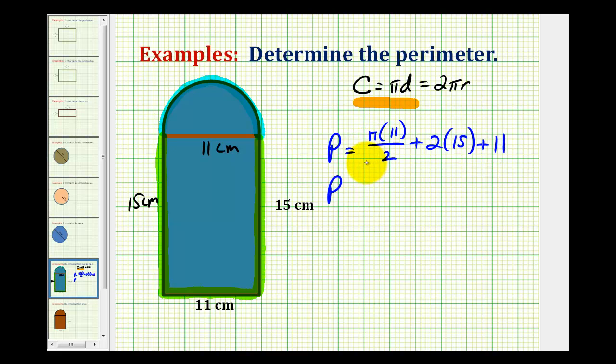Now let's go ahead and determine the exact value of this, and then we'll get a decimal approximation. So two times 15 would be 30, 30 plus 11 would be 41, so the perimeter would be 41, plus this would be 11 halves pi, or 11 pi halves, and this is all in centimeters.